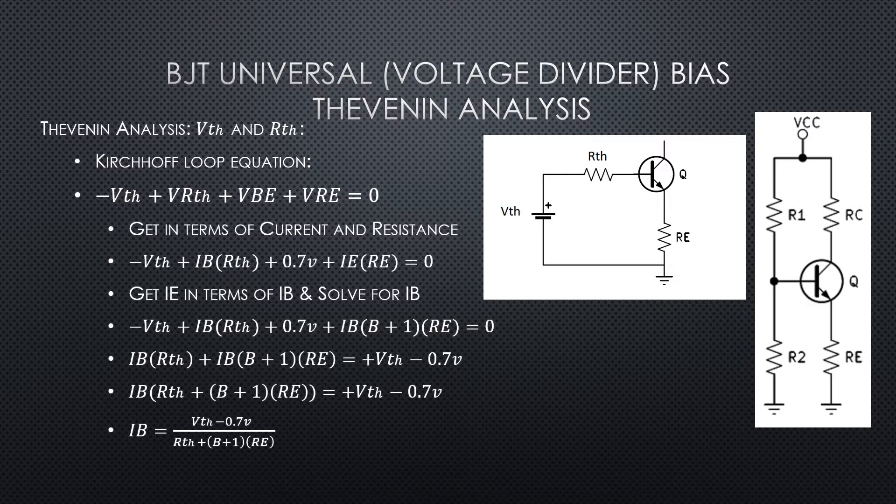Now we can basically solve for the IB, factor out the IB, and we end up with IB equals V Thevenin minus 0.7 volts divided by R Thevenin plus RE times beta plus one.